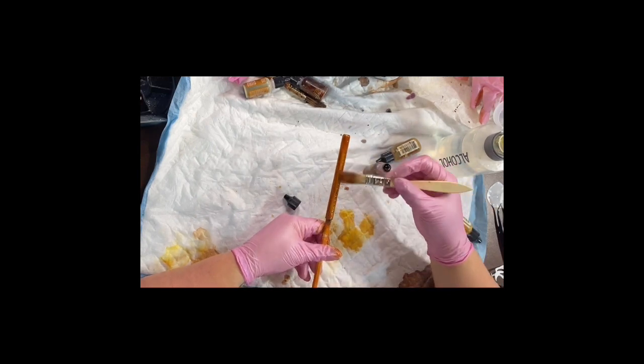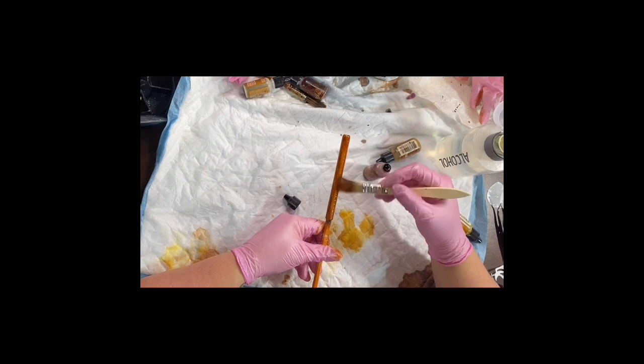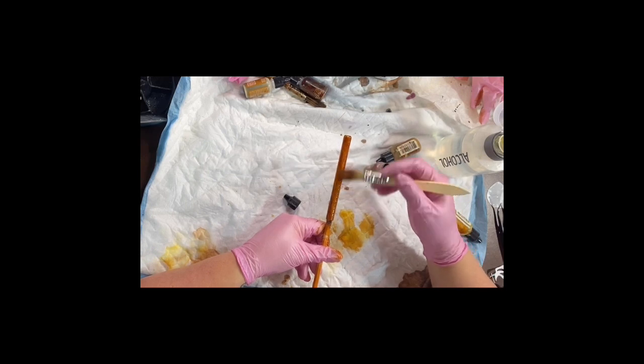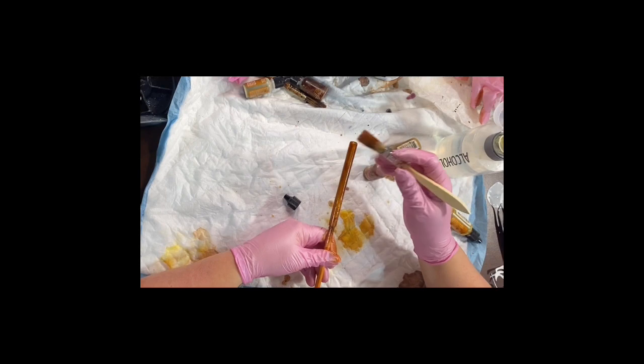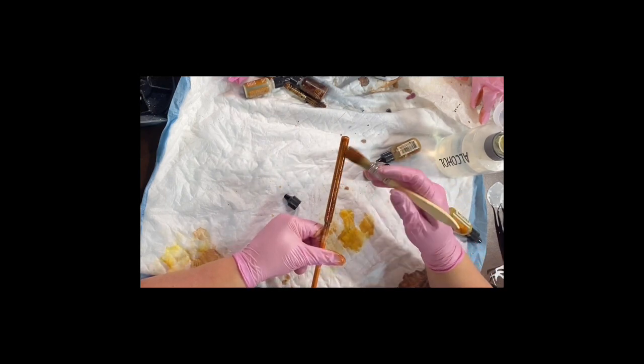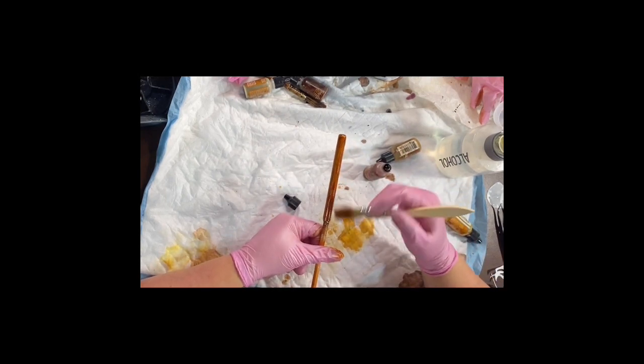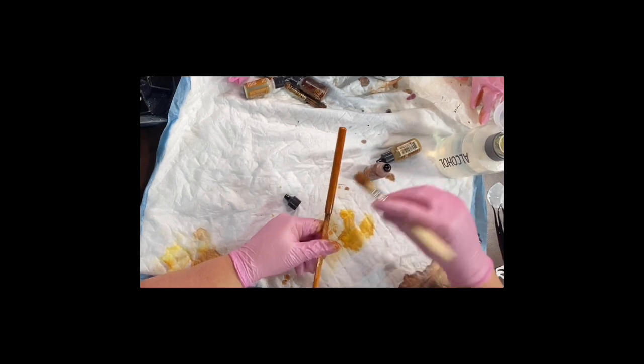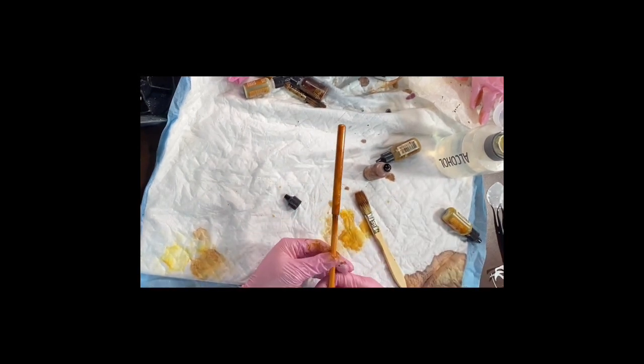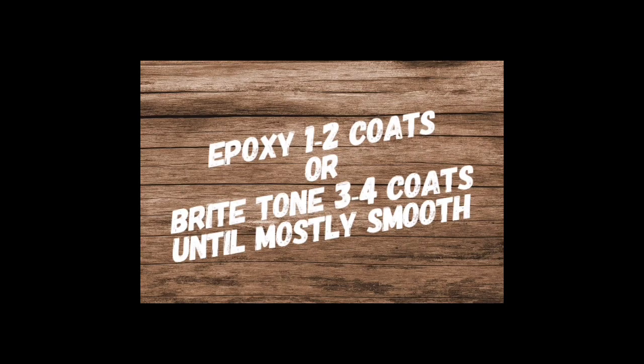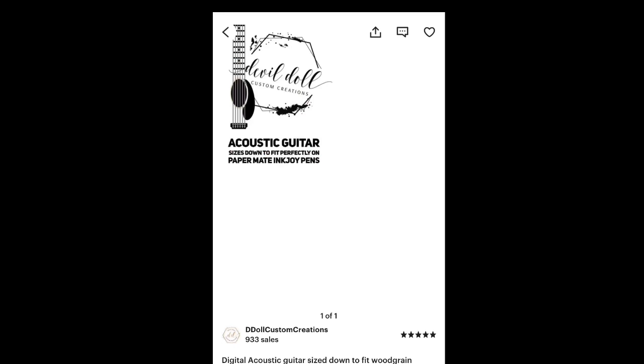You can seal your inks in with clear spray paint. Very lightly start, barely any dusting, and then the next coat about 10 minutes later do a little bit heavier. The next one do a little bit heavier. You can do that way before you epoxy, or you can just let your ink sit for 24 to 48 hours before you move on to this step. Here is my listing I created to make it perfect size guitar for these pens. You find it on Etsy.